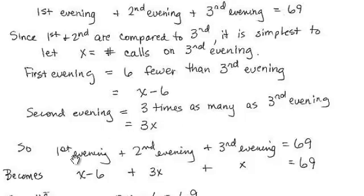Using our new definitions, first evening: X minus 6. Second evening: 3X. Third evening: X. So now we have a math equation to solve.